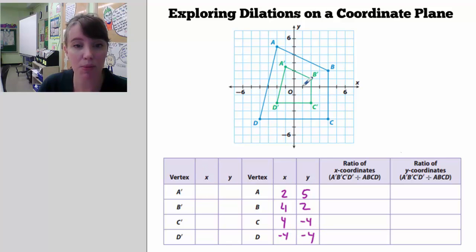And so A prime is negative 1 and 2.5. And B prime is 2, 1, and C prime is 2, negative 2, and D prime is negative 2, negative 2.